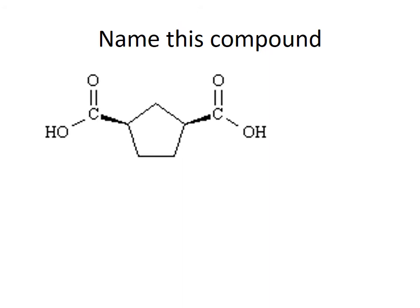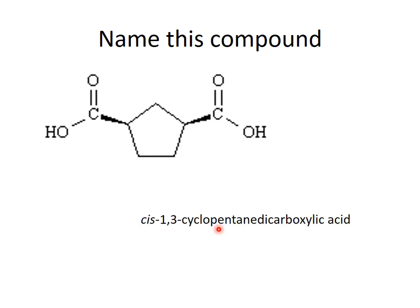To name this compound, it is going to be a dioic acid. If you look, you can see that it has carboxylic acid groups attached to a cyclopentane ring. So we name this as cyclopentane, and we locate those two functional groups, giving 1,3-cyclopentanedicarboxylic acid. Also note that the two groups are on the same side, so the proper way to name it is cis-1,3-cyclopentanedicarboxylic acid.